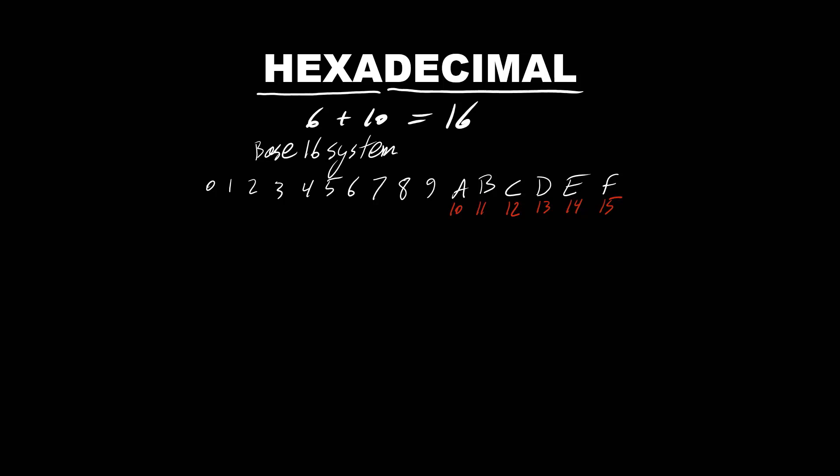We can see similar place values for hexadecimal number system as we saw for other number systems. But instead of these place values being in powers of 10, 2, or 8, they are in powers of 16 because hexadecimal is base 16 system.